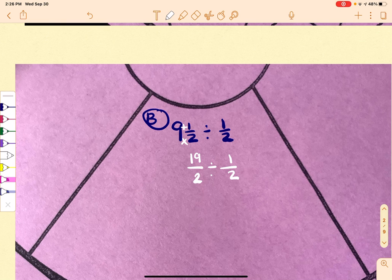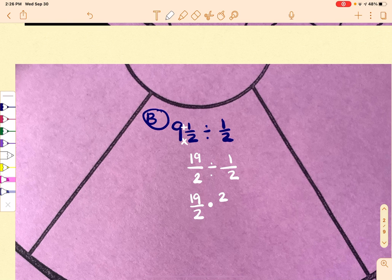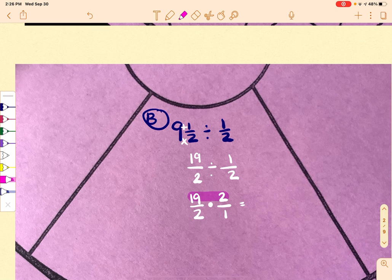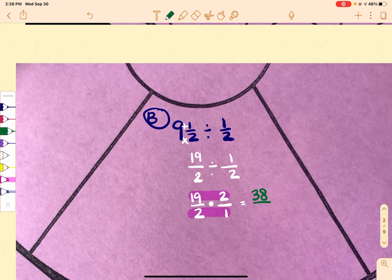So 9 times 2 is 18 plus 1 is 19. So it's going to be 19 over 2. Then I'm going to go through and do keep, change, and flip. And then I can multiply across. So 19 times 2 is 38 and 2 times 1 is 2.